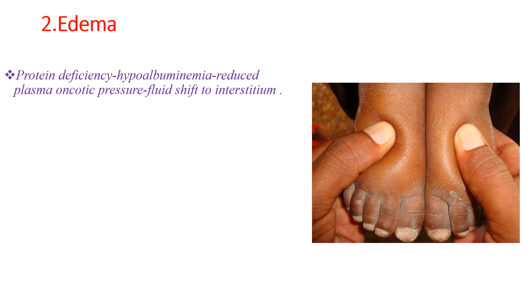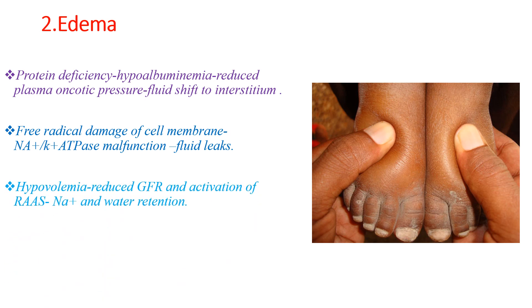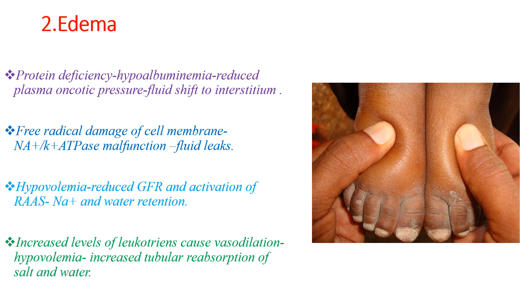The other physical finding is edema. During malnutrition, protein deficiency causes hypoalbuminemia, which causes reduced plasma oncotic pressure, resulting in fluid shift to the interstitium and edema. Another mechanism is free radical damage to cell membranes, causing fluid leakage and predisposing to edema. A third mechanism is hypovolemia — due to intravascular volume depletion, there is reduced GFR and activation of the RAAS system, causing sodium and water retention. Increased leucotrienes cause vasodilation and increased tubular reabsorption of salt and water. Edema in malnutrition can result from all these reasons.